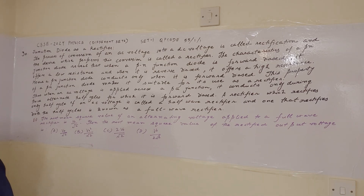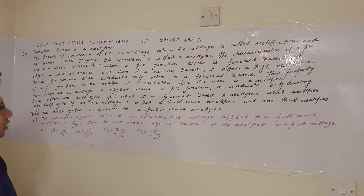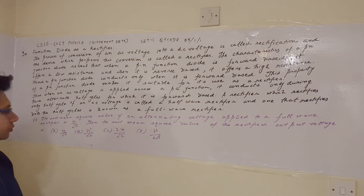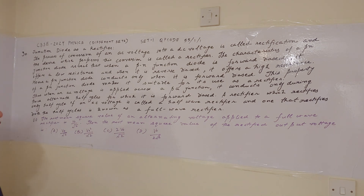The first question is: the root mean square value of an alternating voltage applied to a full wave rectifier is V0 upon root 2. Then the root mean square value of the rectified output voltage is — option A: V0 upon root 2, option B: V0 square upon root 2, option C: 2V0 upon root 2, and option D: V0 upon 2 root 2.